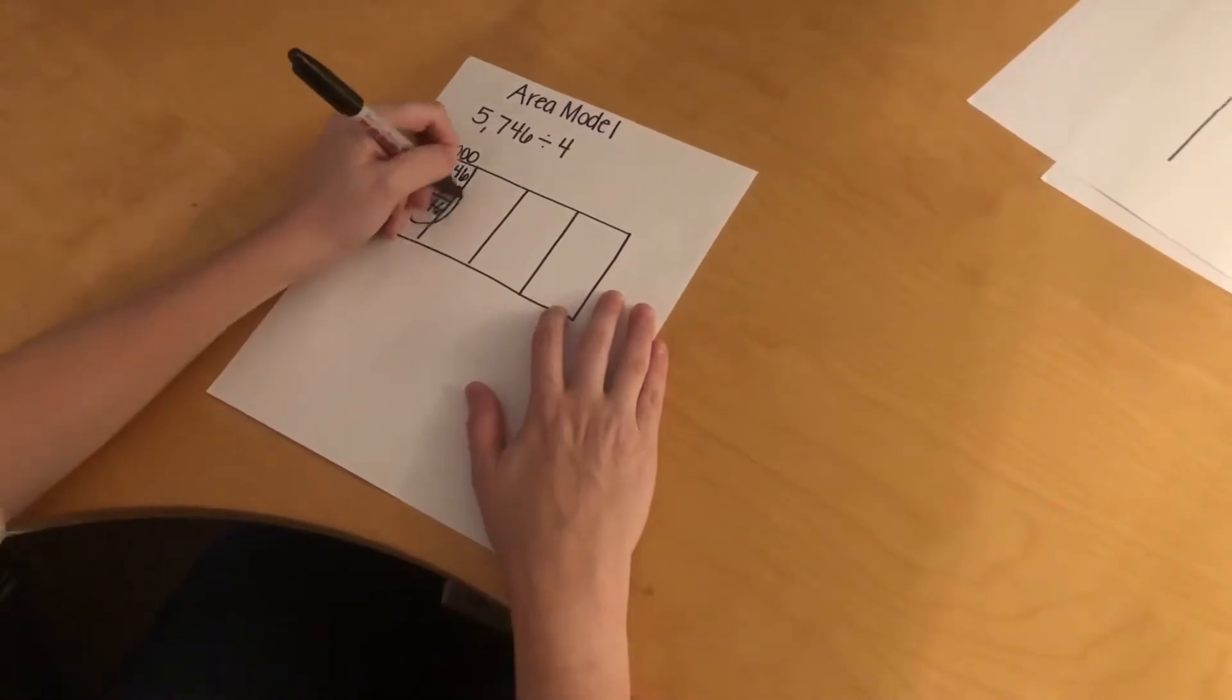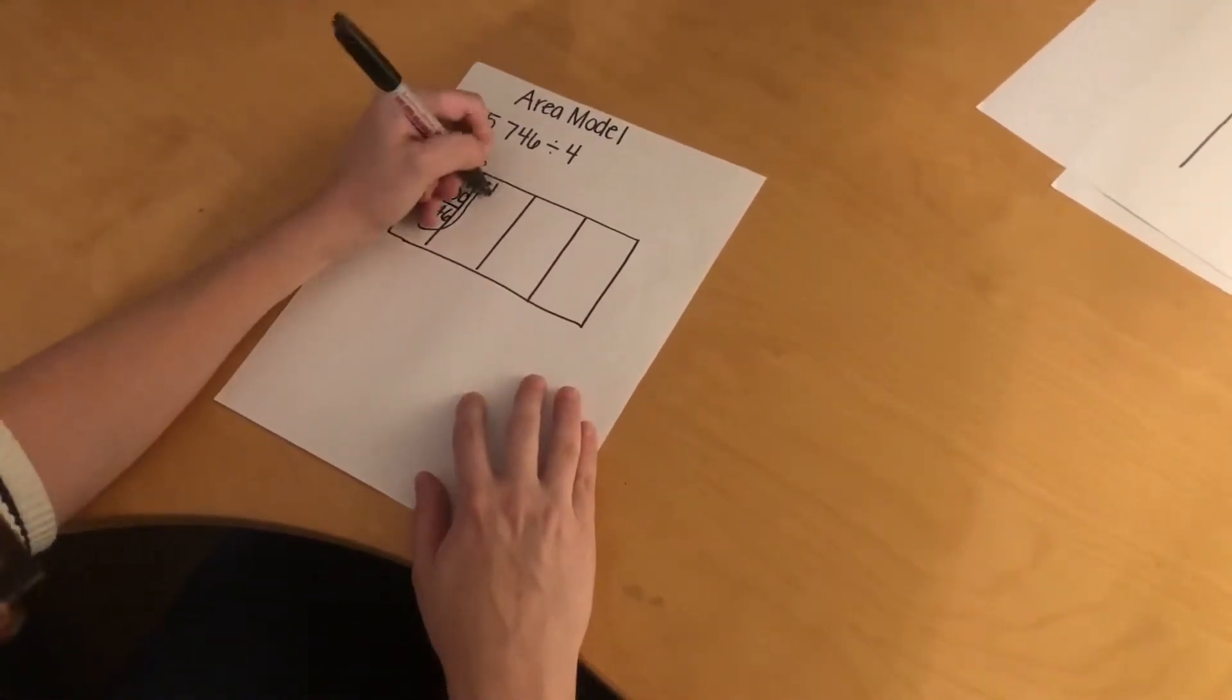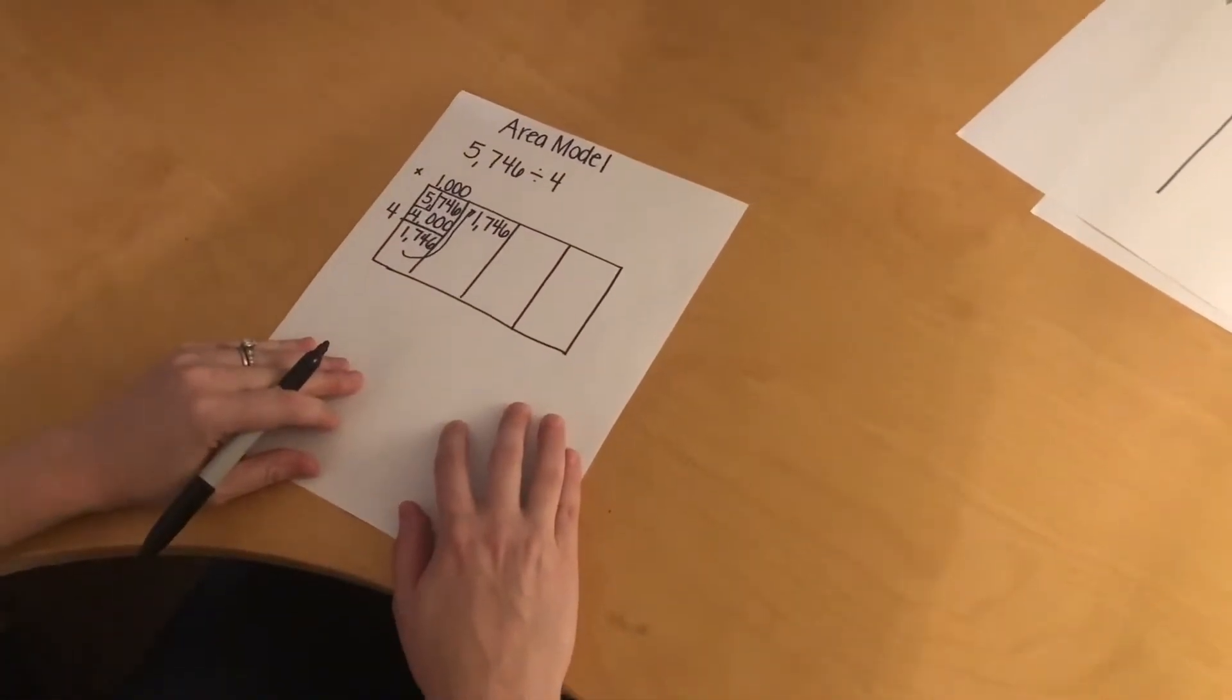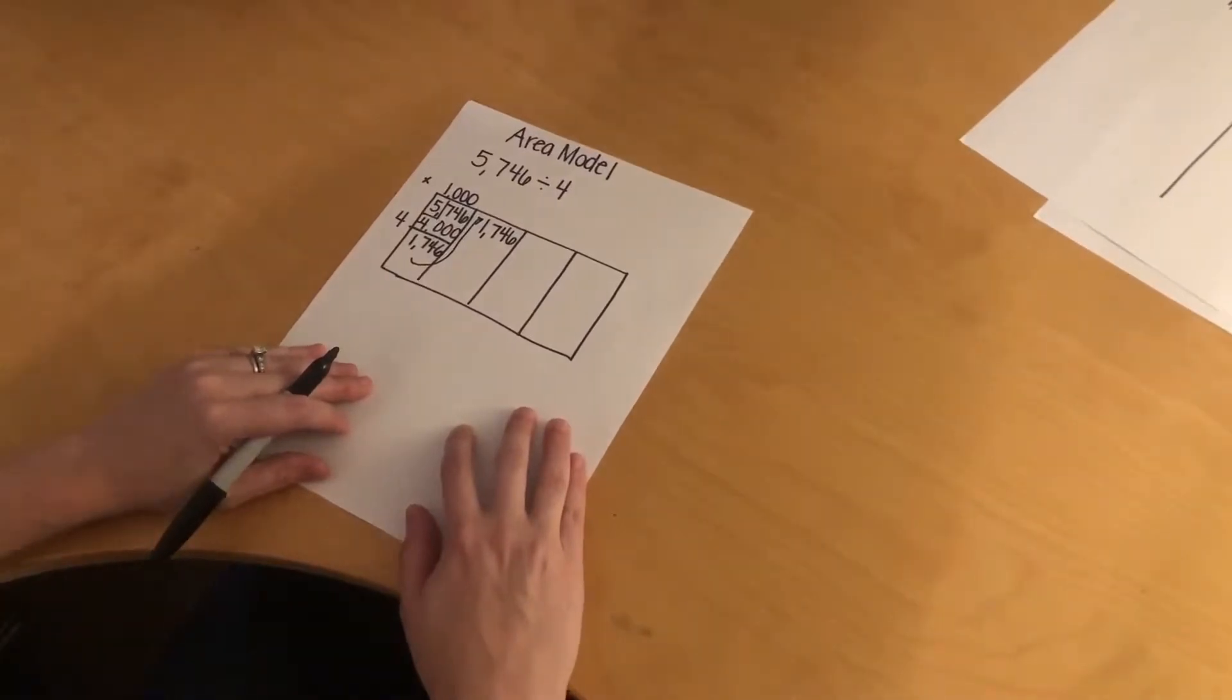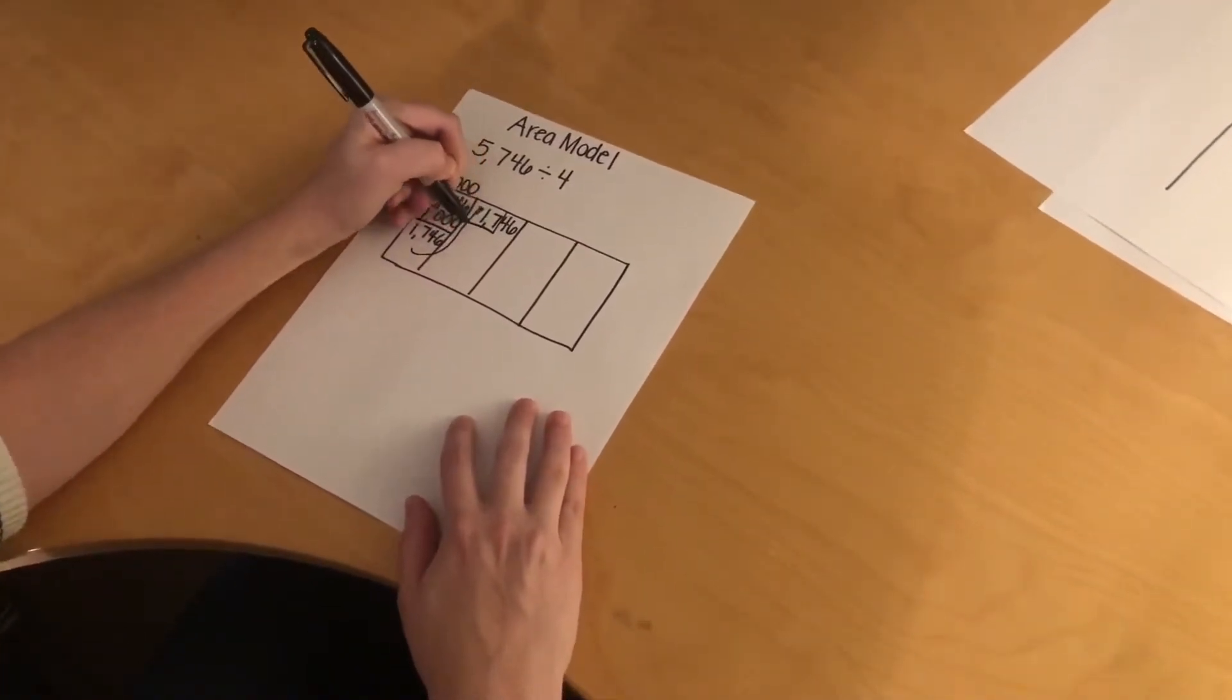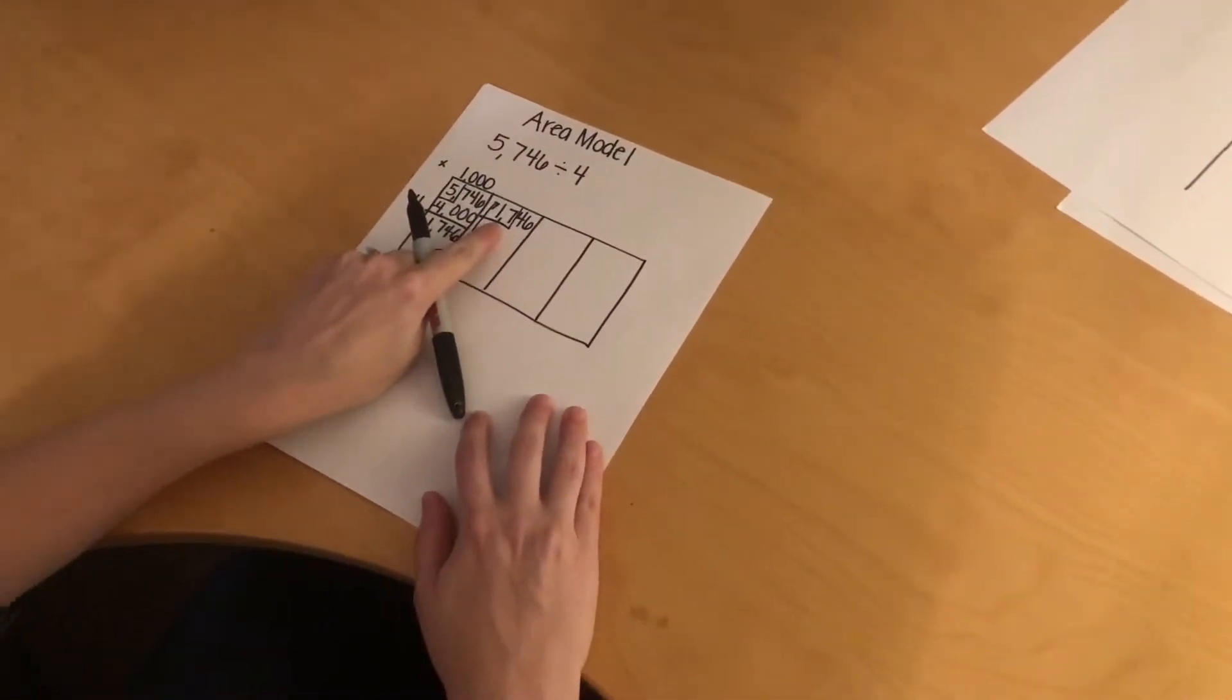I'm going to move this on over to the hundreds place of my place value chart. Now, since I'm working in my hundreds place, I need to think how many hundreds I have. I have a 7 in the hundreds place, so everything in front of it tells me how many hundreds I have. So I have 17 hundreds.